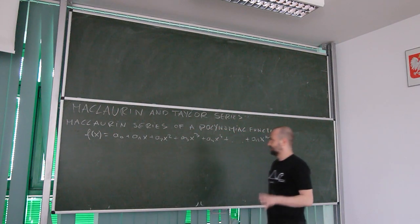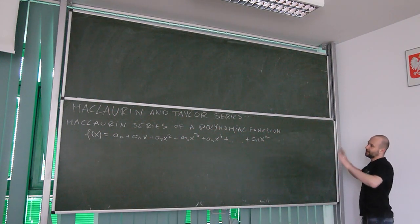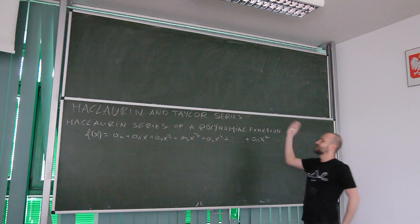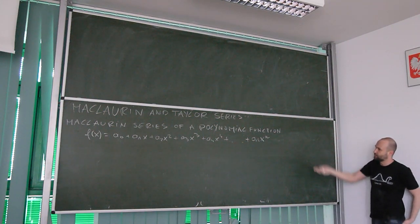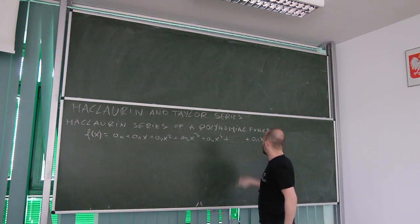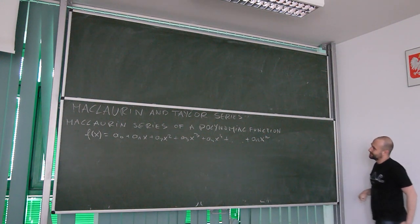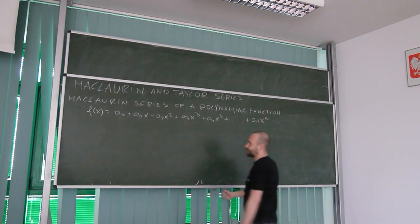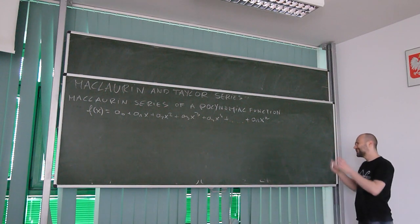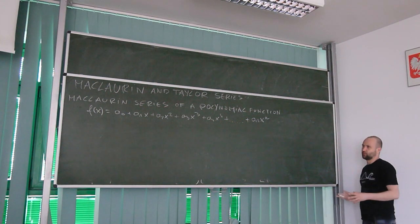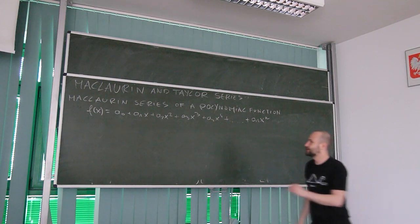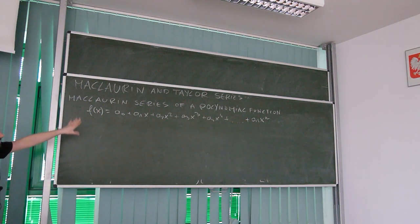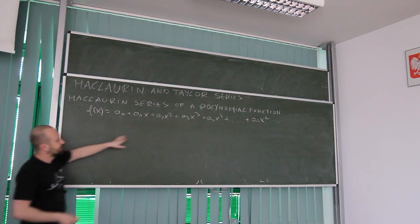So what is our task here? Let's say we are dealing with a polynomial function f(x) equal to a₀ plus a₁x plus a₂x² plus a₃x³ plus a₄x⁴, going on like this until aₙxⁿ. We want to rewrite this function in a slightly different but equivalent way, using its derivatives. So let's first calculate all consecutive derivatives of this function right up to the nth order.